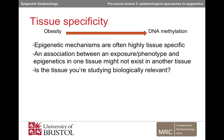Next, we will discuss some issues that are more specific to epidemiological studies of molecular phenotypes, including the epigenome. The first is tissue specificity. Epigenetic mechanisms are often highly tissue specific, meaning that an association with an exposure or phenotype in one tissue might not exist in another. Epidemiological studies are often restricted to using biological samples that can be collected on a large scale, non-invasively, such as blood and saliva. This raises the question of whether these tissues are biologically relevant.